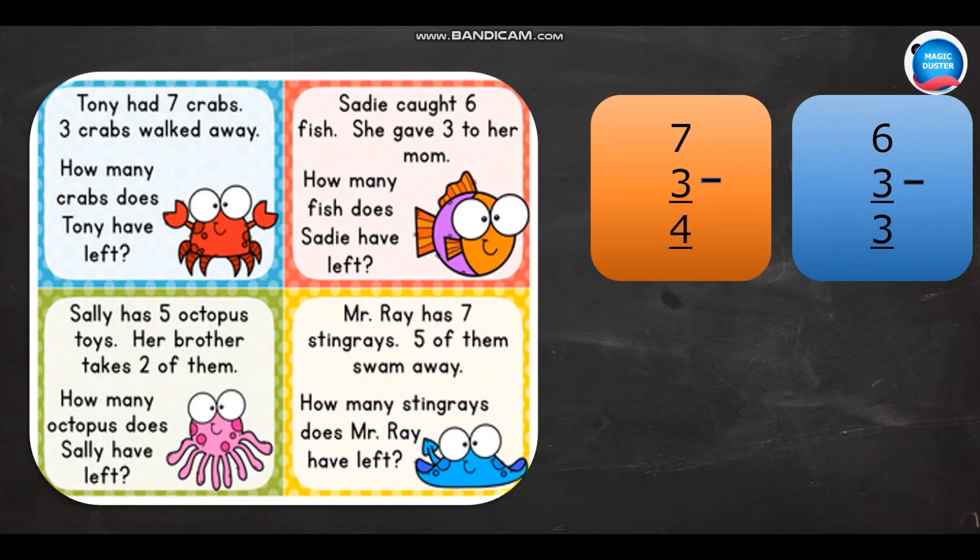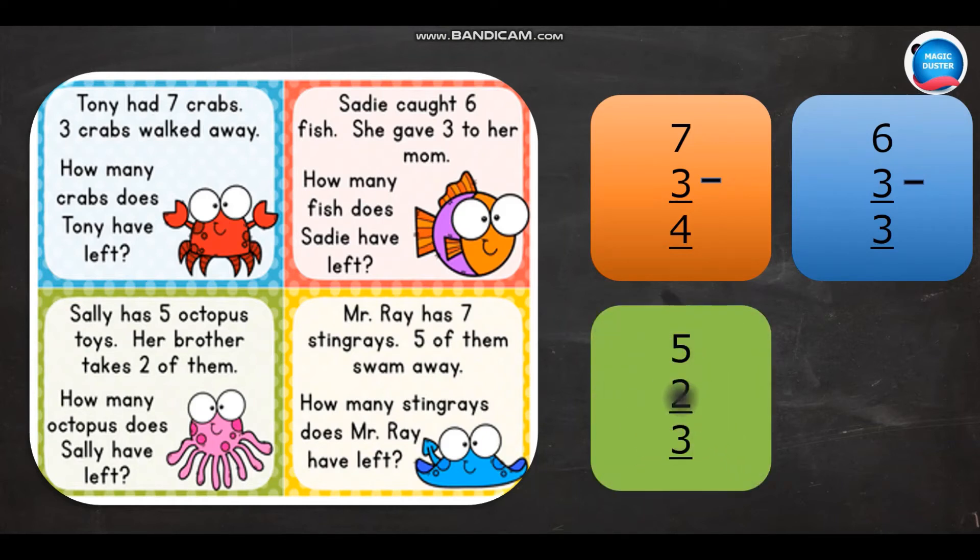Then, the next one. Sally has five octopus toys. Her brother takes two of them. How many octopus does Sally have left? Yes, so five are there and two were taken away. We know that remaining, difference, and taken away are the pet names of subtraction, which are the terms we use for subtraction. So, if I do the subtraction, the answer must be three.